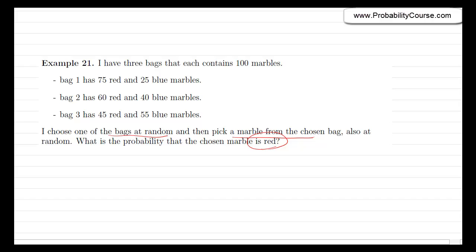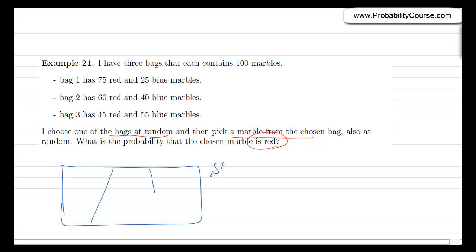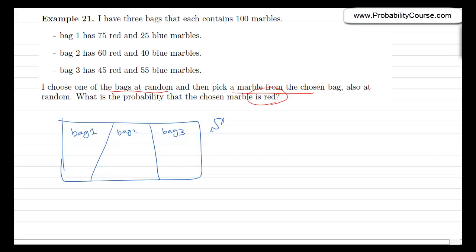Let's solve this problem. In this problem, my sample space S can be divided into three sets: either I choose bag 1, or I choose bag 2, or I choose bag 3. Now, let's call the event that the chosen marble is red the event R. We are interested in probability of R, but we don't know what probability of R is right now. But we do know the probability of R given that we have chosen a specific bag.